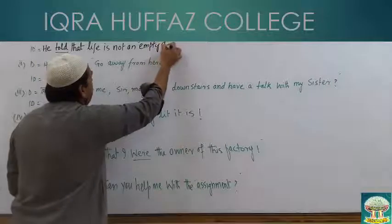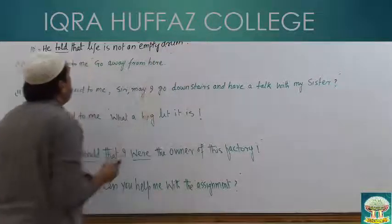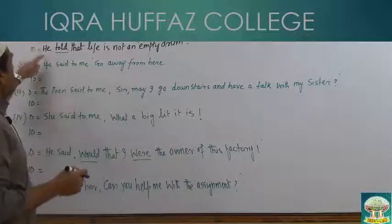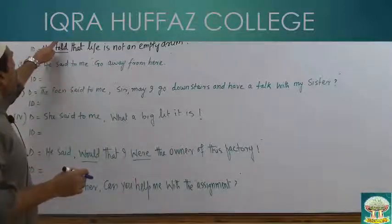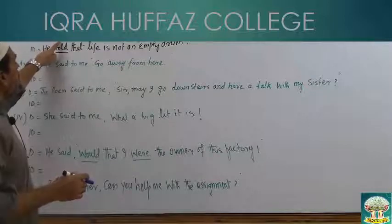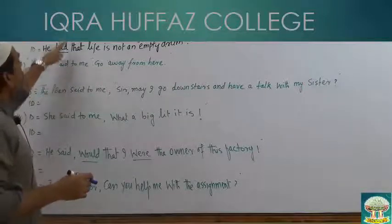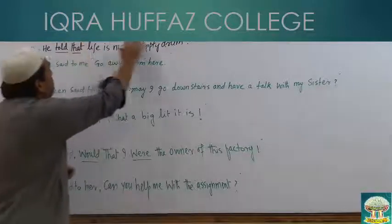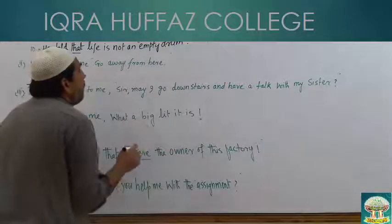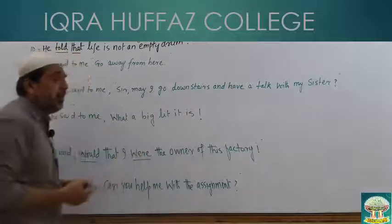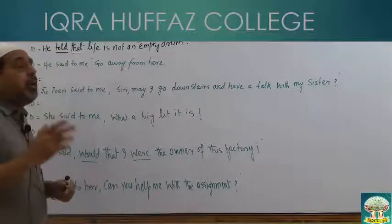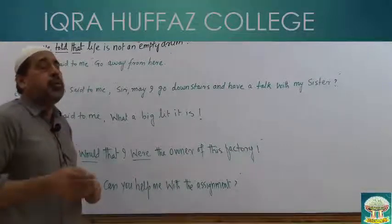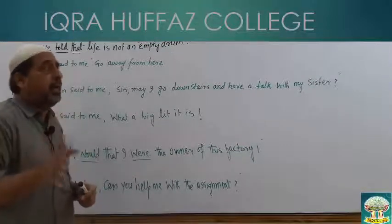इस sentence को direct से indirect में तब्दील करने के लिए: subject 'he' as it is रहा, 'said' जो reporting verb past tense में था वो 'told' में तब्दील हो गया, comma inverted comma replace करके 'that' लगाया, और फिर यह पूरा statement as it is रहा — क्योंकि यह universal truth है। जब कोई habit या universal truth हो, तो ज़माने को past tense में convert नहीं करते।